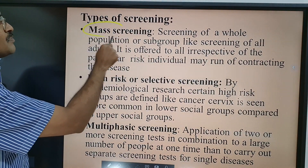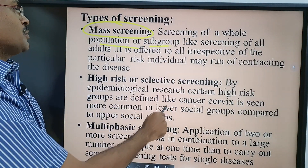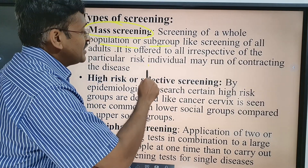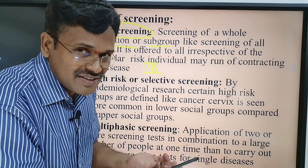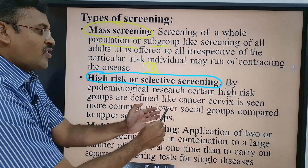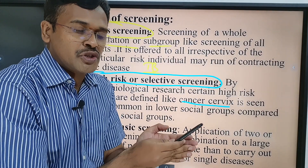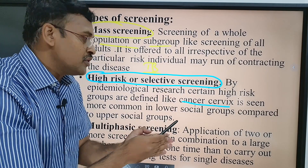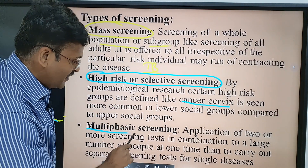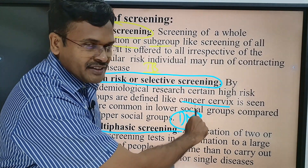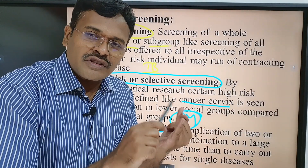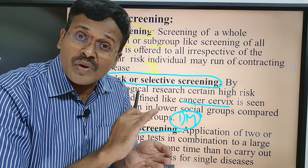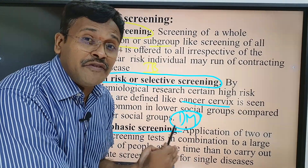What are the types of screening? There is mass screening — screening of a whole population or subgroup — where, irrespective of a person's immune status or social status, everybody is included to be screened for tuberculosis. Then there is high-risk or selective screening, where concentrating on a high-risk group, such as lower socioeconomic groups for cervical cancer, yields more cases. Then we have multiphasic screening, where for one single disease like diabetes mellitus, we screen not only for blood sugar level but also for weight, height, obesity status, hypertension, lipid profile, and renal parameters — screening for everything related to that one disease.